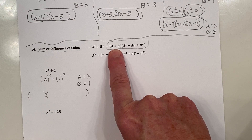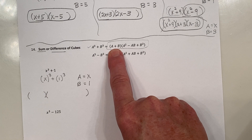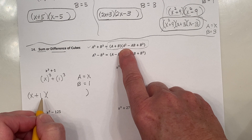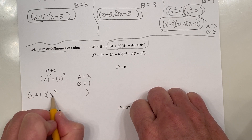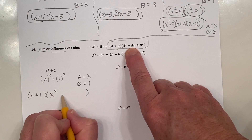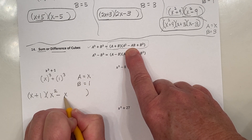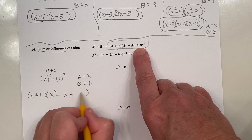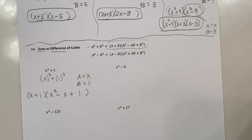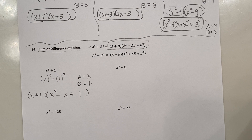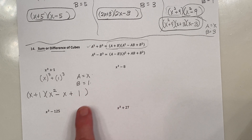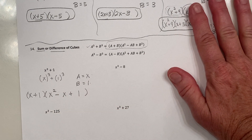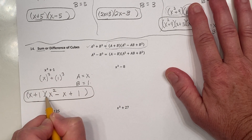The sum of two cubes factors into a binomial times a trinomial. Following the pattern: the binomial is a plus b, which is x plus 1. The first term of the trinomial is a squared, which is x squared. The middle term is minus the product of a and b, which is minus x. The last term is plus b squared, which is plus 1. Upon further inspection, the trinomial x squared minus x plus 1 is prime — the factor-sum chart would not find factors of a times c that add to negative 1.